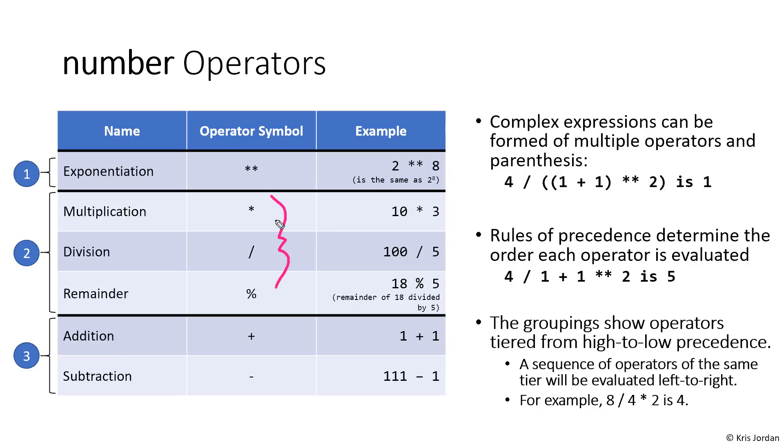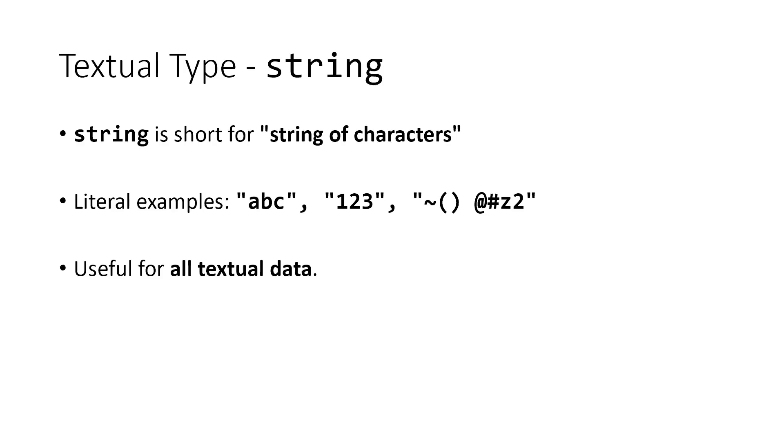When you have multiple operators of the same precedence, the computer, just like in math, will follow those operations left to right. For textual data we use the string type. The word string is kind of funny. It comes historically from this idea of a string of characters.